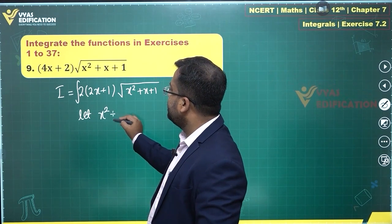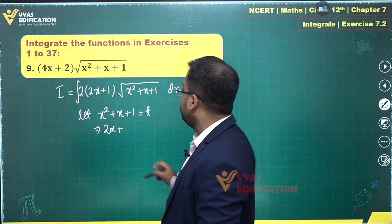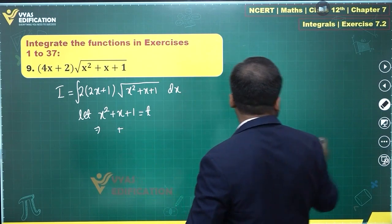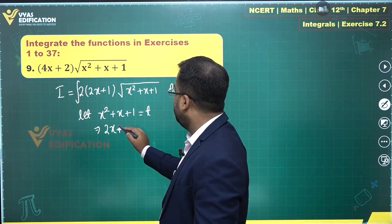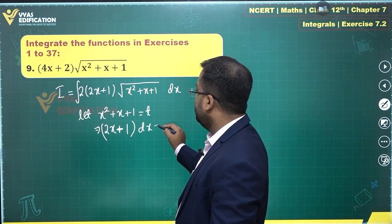x square plus x plus 1 is equal to t, which tells me 2x plus 1 times dx is equal to dt.